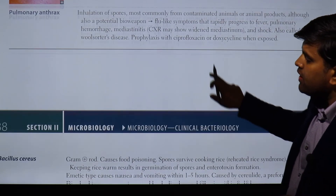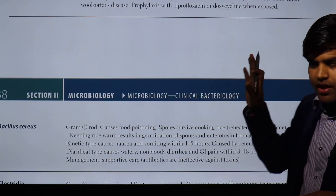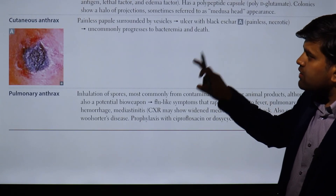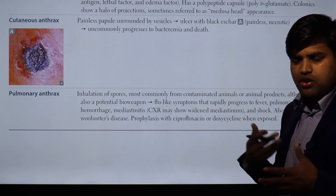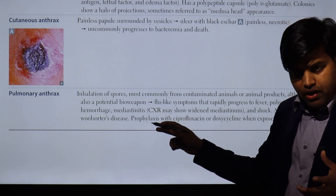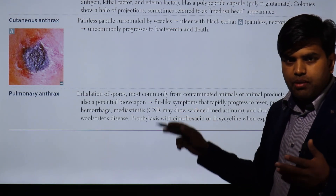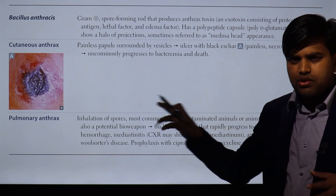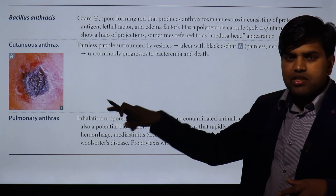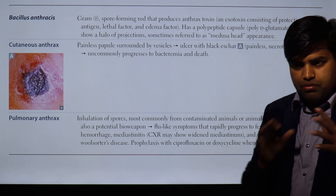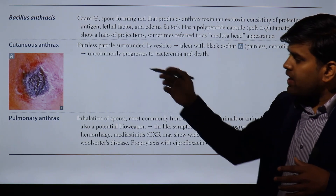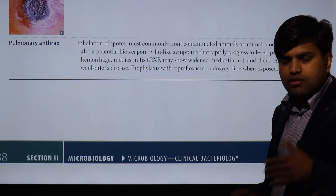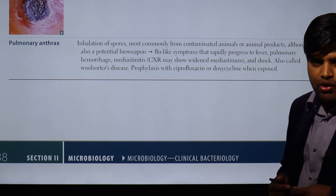To summarize: Bacillus anthracis causes cutaneous and pulmonary anthrax; Bacillus cereus causes food poisoning with immediate nausea and vomiting followed by non-bloody watery diarrhea at 8 to 18 hours. Pulmonary anthrax is the more severe form, used as a bioweapon, causing flu-like syndrome, fever, pulmonary hemorrhage, mediastinitis, shock, and potentially death. Cutaneous anthrax rarely causes death. If you have questions, please ask in the comments below. Thank you.